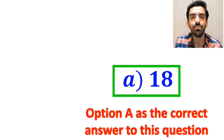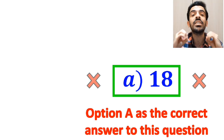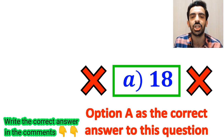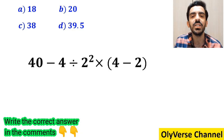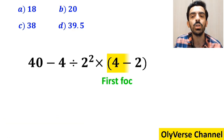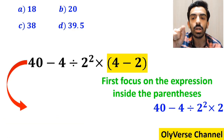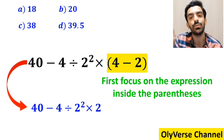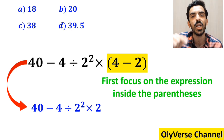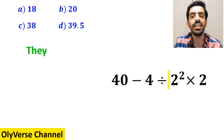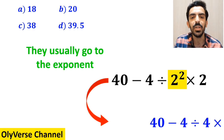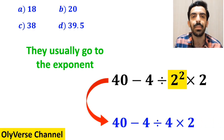Some other people, when solving this question, first focus on the expression in parentheses and replace the whole expression with 14 minus 4 divided by 2 squared, multiplied by 2. In the next step, they usually go to the exponent and simplify it to 14 minus 4 divided by 4, multiplied by 2.